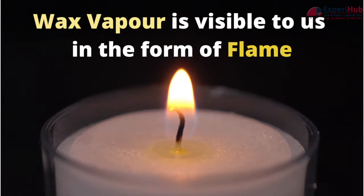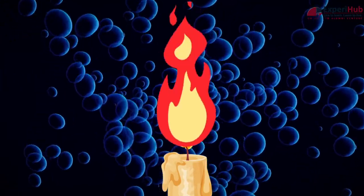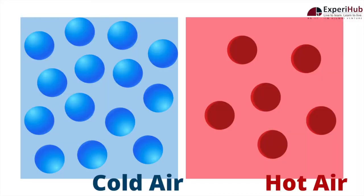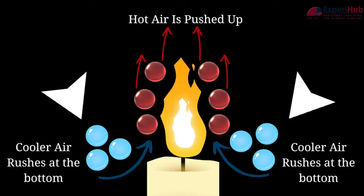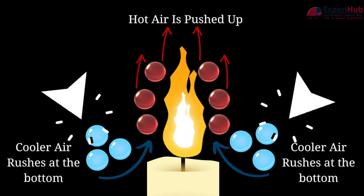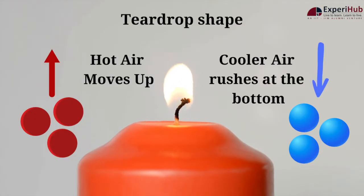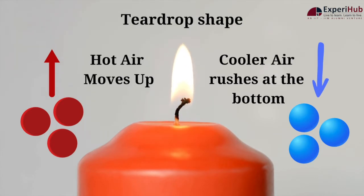As the flame burns, it warms the gases in the surrounding atmosphere, and this hot air is pushed up due to its lower density. As the air around the flame is pushed up, cooler air rushes in at the bottom of the flame to fill the space. The cooler air is heated, it too rises up and is replaced by cooler air again. This creates a continual cycle of upward-moving air around the flame, giving it a teardrop shape.